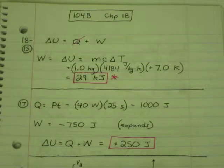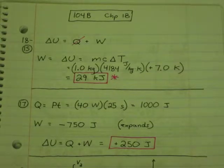One kilogram of water is stirred vigorously until its temperature rises by 7 degrees Celsius. How much work is done on the water?